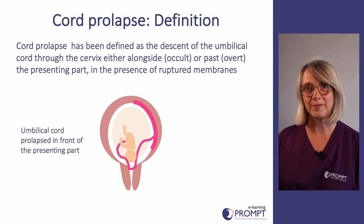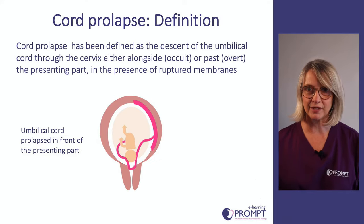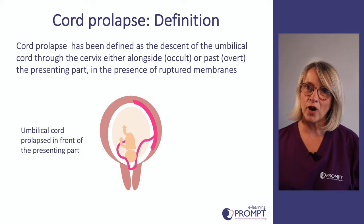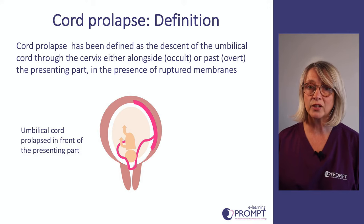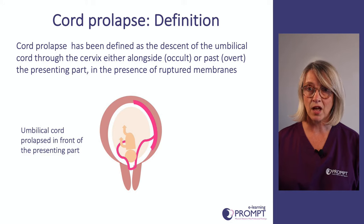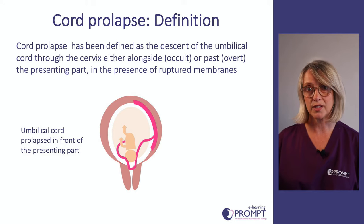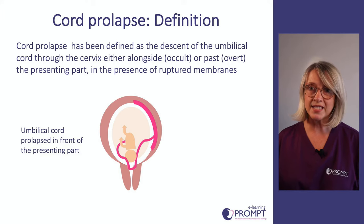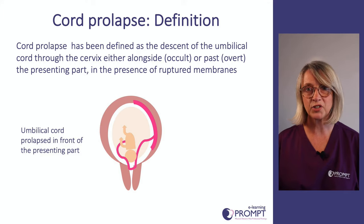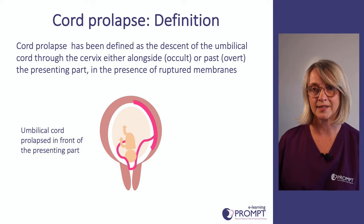Cord prolapse — the definition. Cord prolapse has been defined as the descent of the umbilical cord through the cervix either alongside — known as occult — or past — known as overt — the presenting part, in the presence of ruptured membranes.